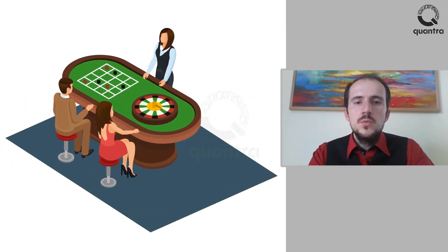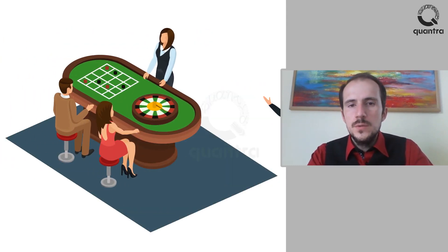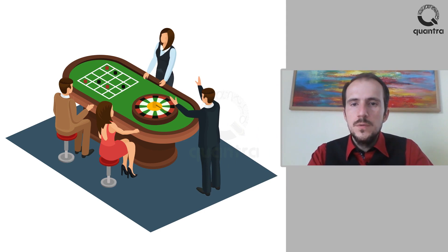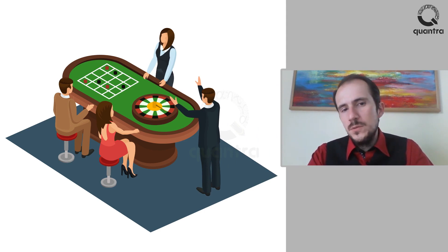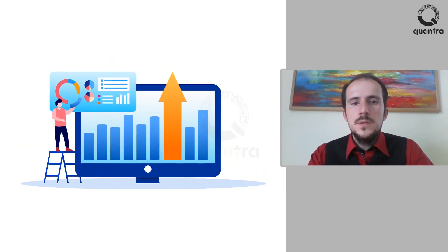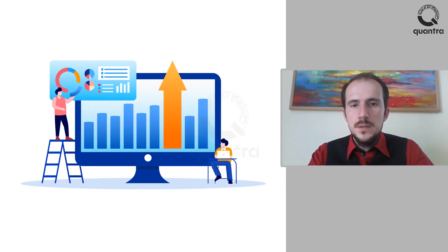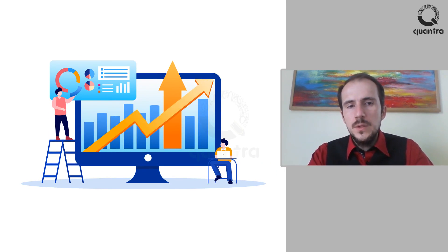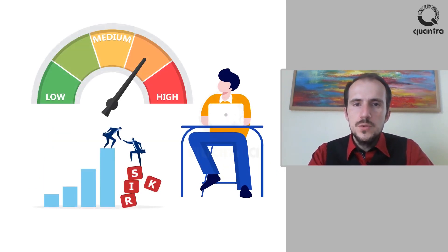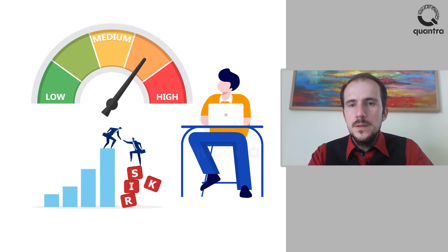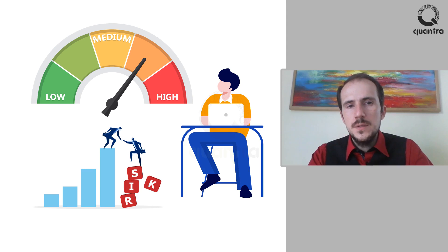You must have seen movies where the hero walks into a casino and bets all of his money on one bet and wins big. It feels good, right? You must have also felt this while looking at an asset you are sure will go up like crazy. Maybe it has already gained 5% and can double up. However, the rational part of your brain cautions you from going all in. The asset might be very volatile and it can fall as fast as it can go up.